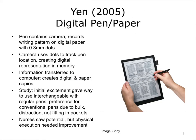Yen studied the use of digital pen and paper by nurses. The digital pen and paper consisted of a pen with a camera, which uses the pattern of 0.3 mm dots on special paper to track the pen location and create a digital representation in memory. This information is later transferred to a computer and dual digital and paper copies are created simultaneously. In Yen's study, initial excitement gave way to nurses using them interchangeably with regular pens. Often they would just choose whatever was most handy. The digital pens were bulkier than regular pens and could not fit in pockets. Nurses saw the potential of these, but in execution, the system required more development.